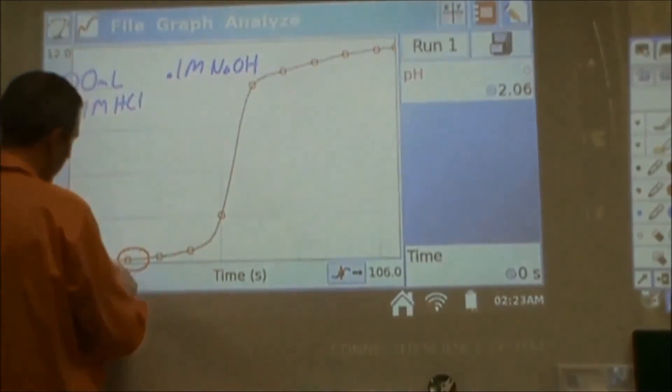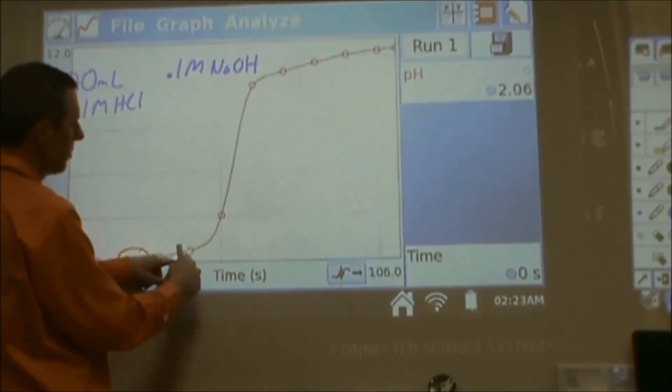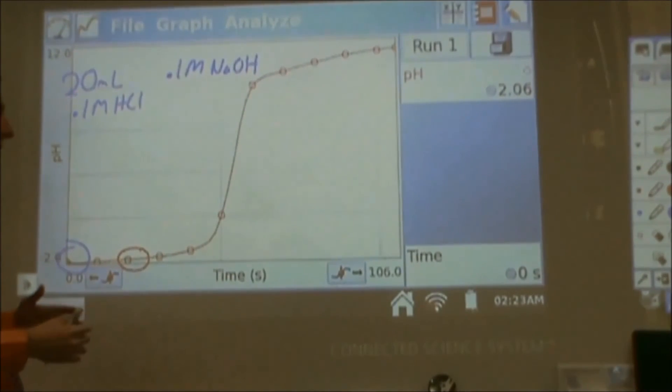And that is why, when you go from here to here, it took quite a bit of base. When you go from 2 to 3, it took less. When you go from 3 to 4, it took less. When you go from 4 to 5, and then all of a sudden you get to here, and you're changing so rapidly as you change those pHs.